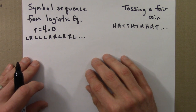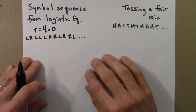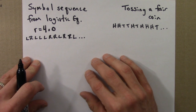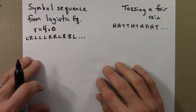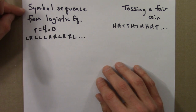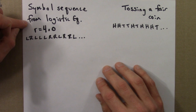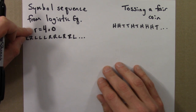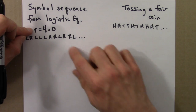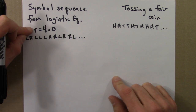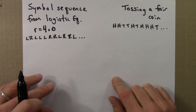Let's analyze properties of a symbol sequence generated by the logistic equation. We'll think about a symbol sequence generated from an orbit of the logistic equation with r equals 4.0, which is a chaotic value — it's aperiodic and has sensitive dependence on initial conditions.